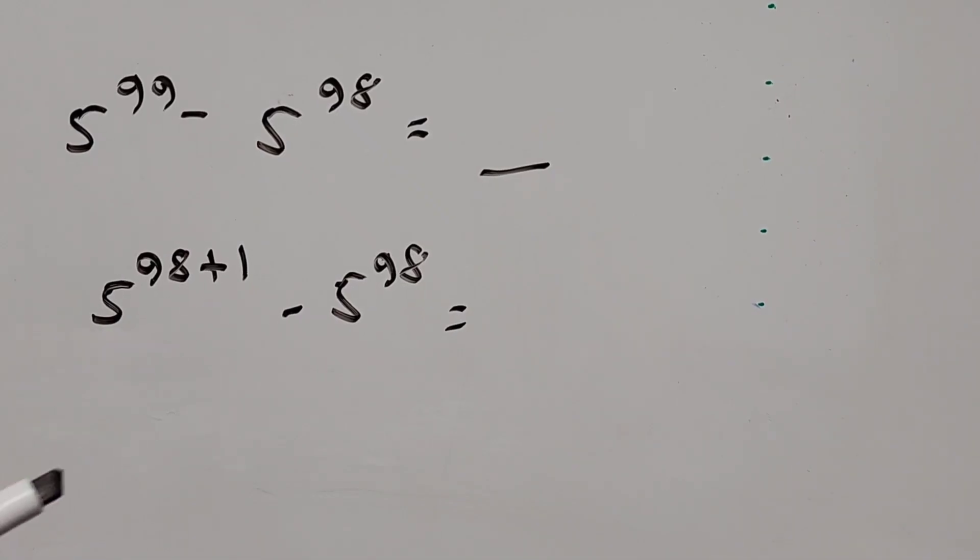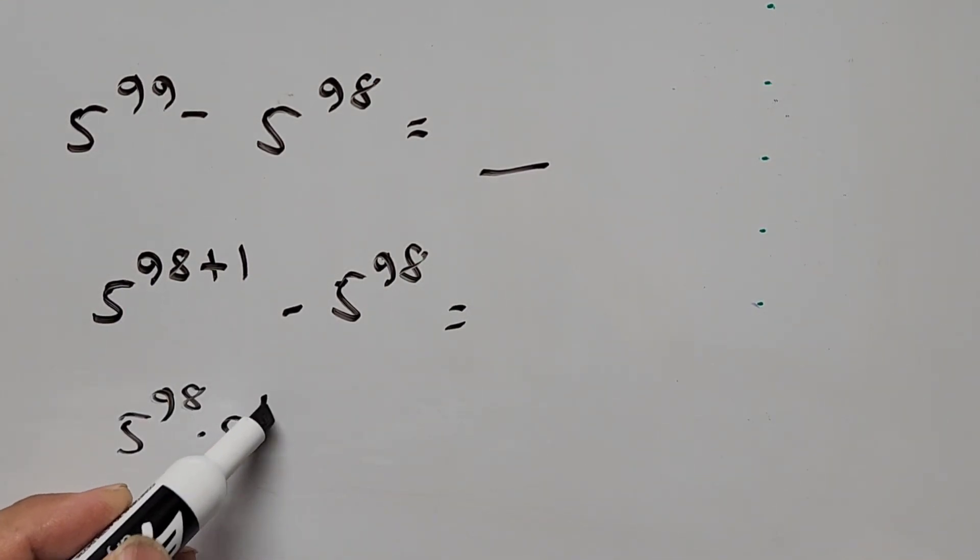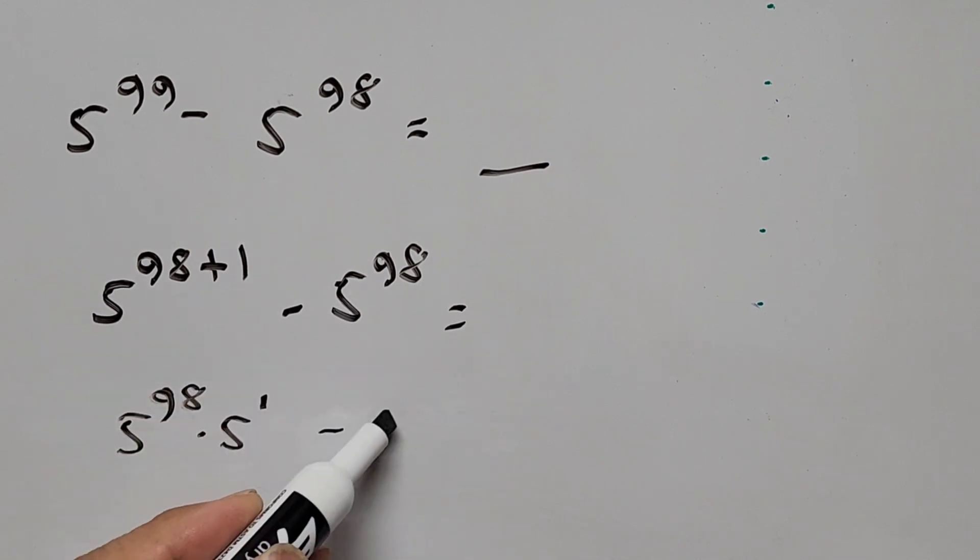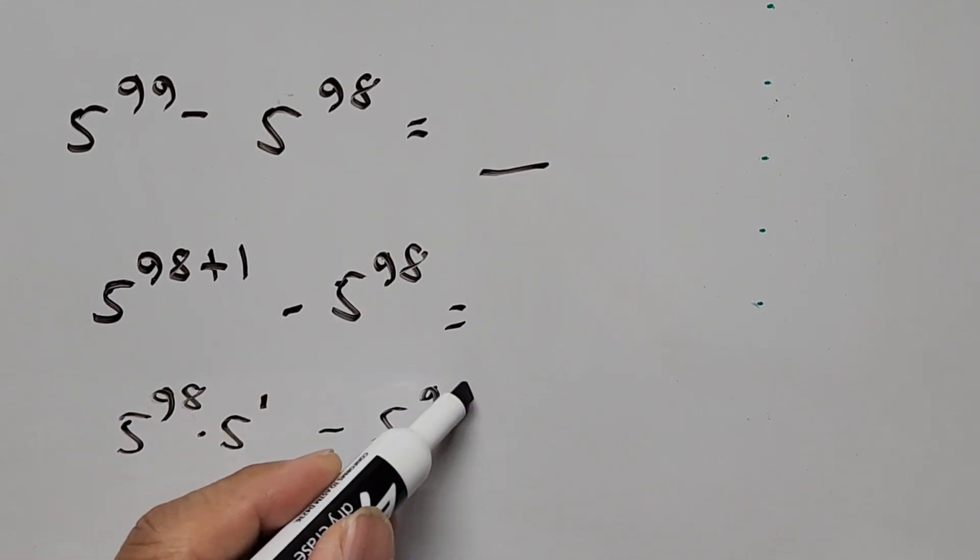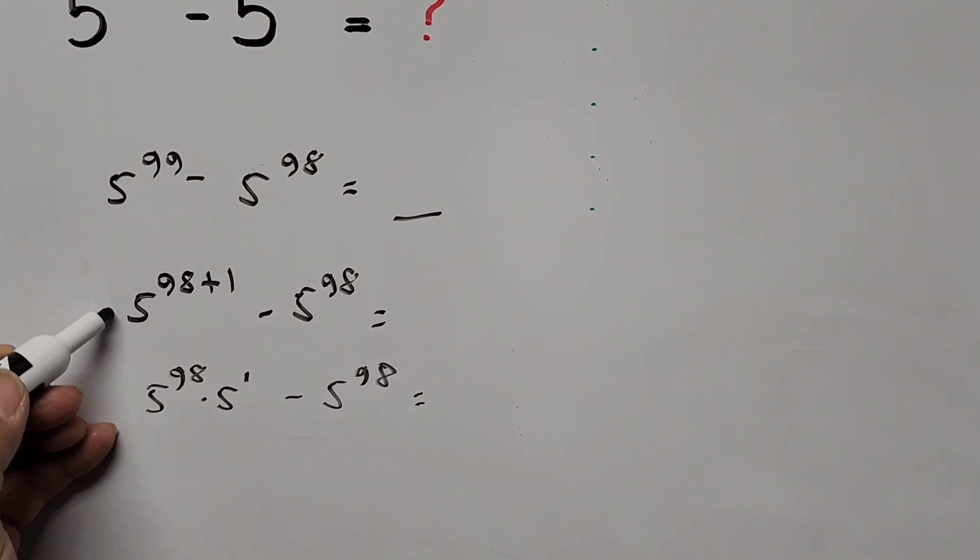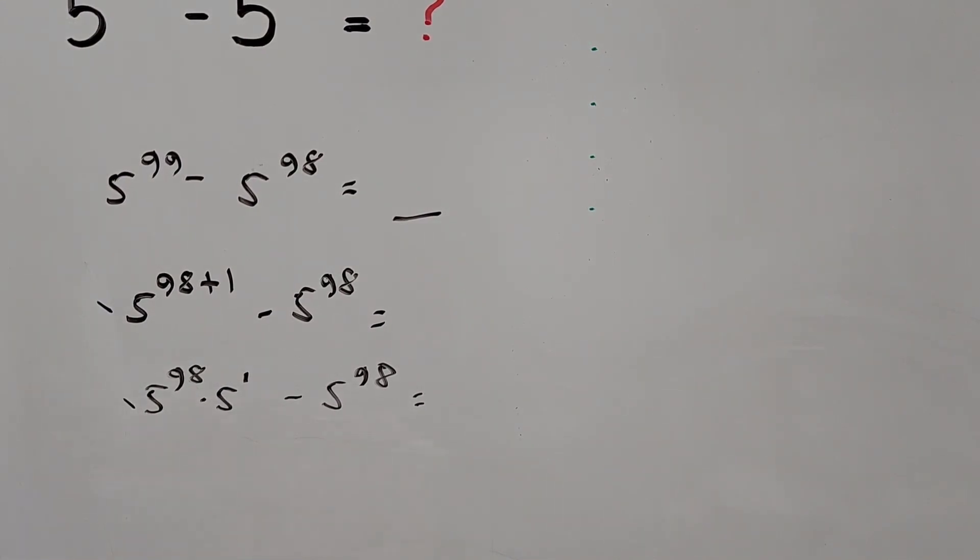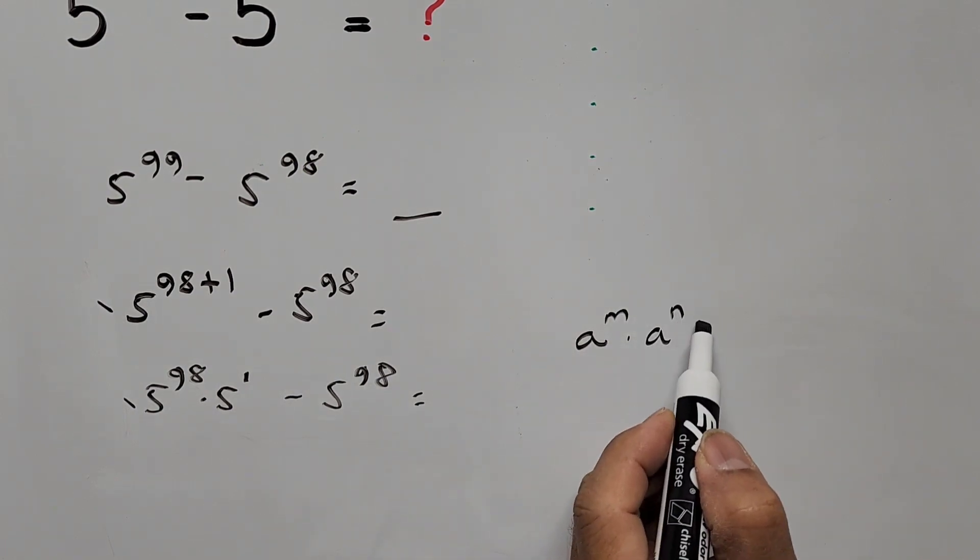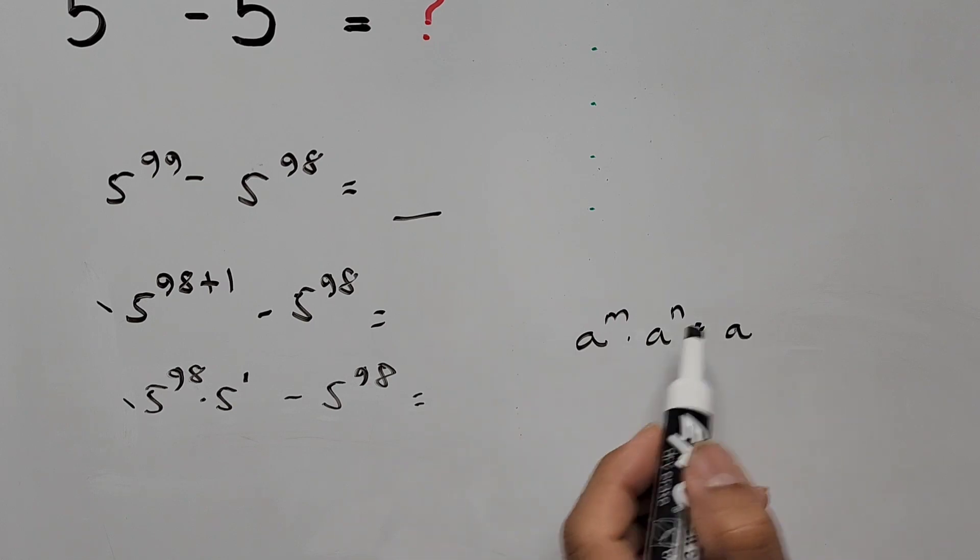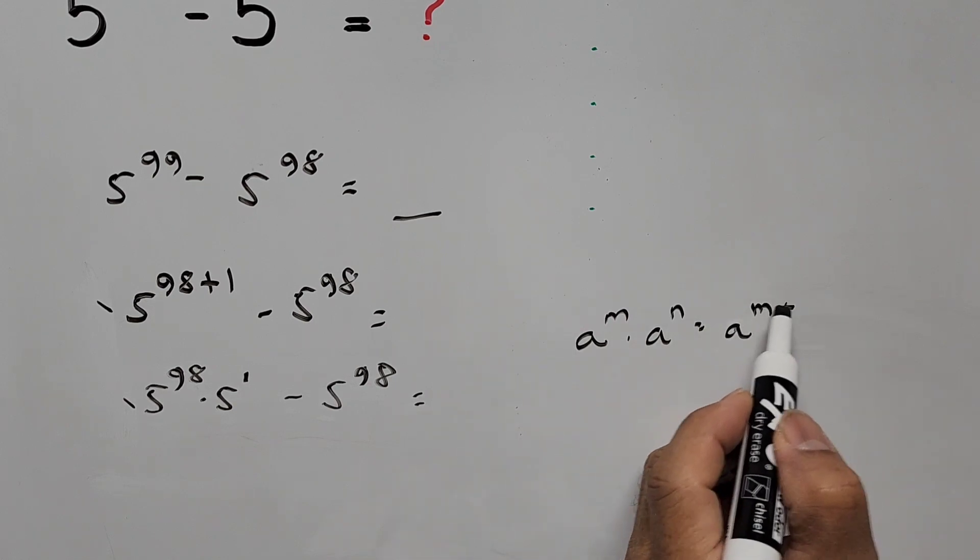And this term can be written the same as 5 to the power of 98 times 5 to the power of 1 minus 5 to the power of 98. And so in this term we use the exponent product rule, that is a raised to m times a raised to n equals a raised to exponent m plus n.